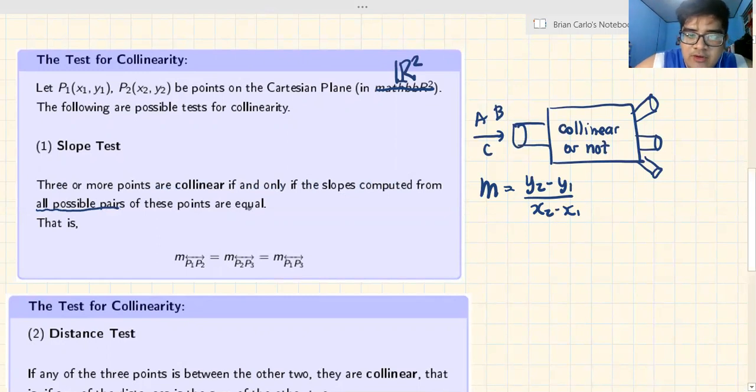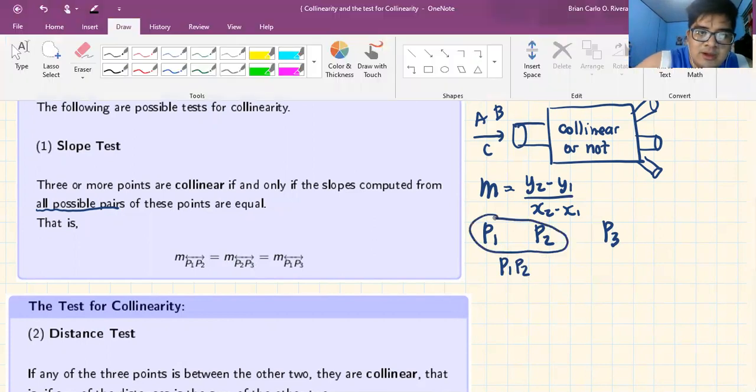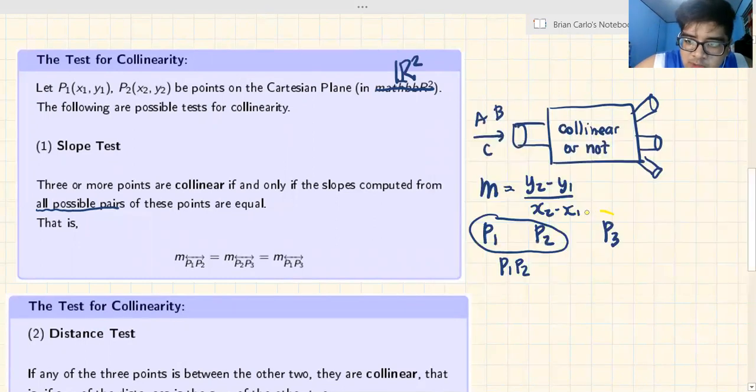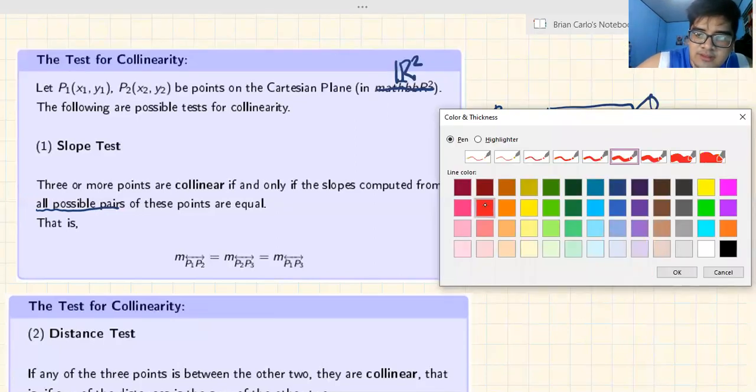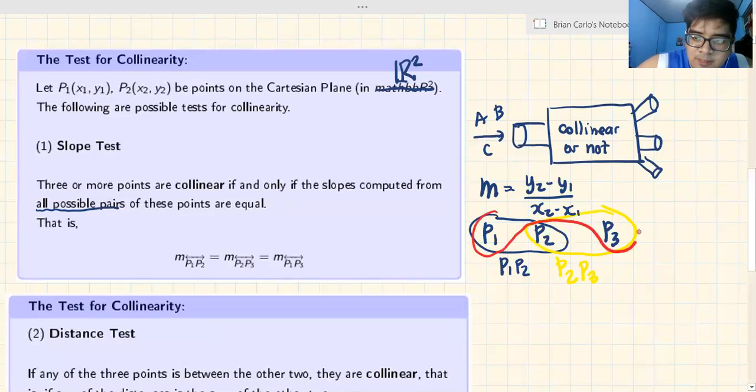In the slope test, three or more points are collinear if and only if the slopes computed from all possible pairs of these points are equal. With three points P1, P2, P3, what are the possible combinations? P1P2, P2P3, and P1P3. You need to get the slope corresponding to each pair.